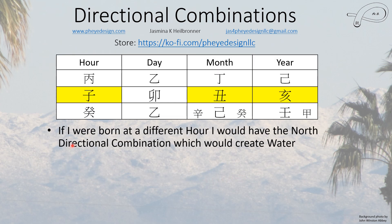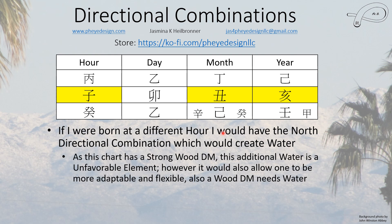Now here is almost my chart — this part is my chart, but with a different hour. If I were born at a different hour, I would have the north directional combination, which would create water. You can already see that water is pretty strong in this chart, and that is true even at the different hour — water is my biggest element. But this is a strong day master.